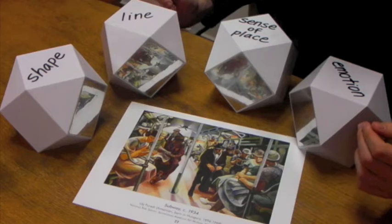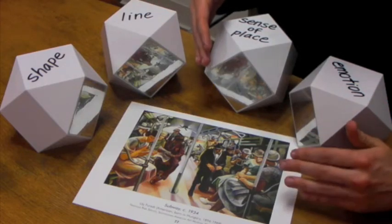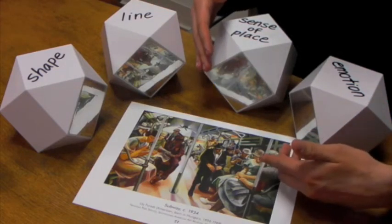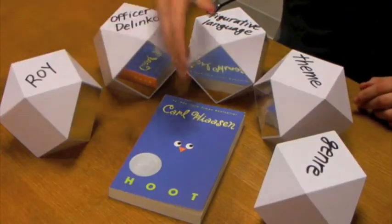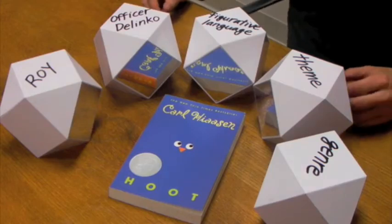You can also mix realia with think blocks to look at real-world phenomena from several points of view. Artwork, objects in a science class, books - all of these can be looked at from several viewpoints.